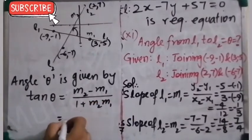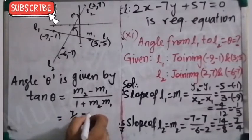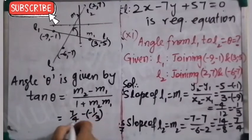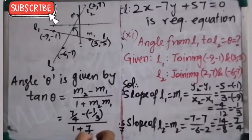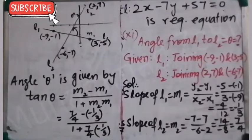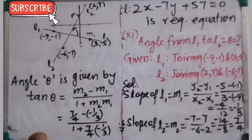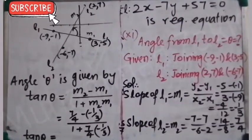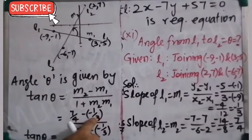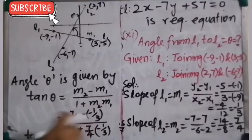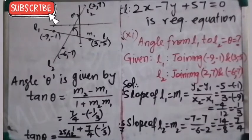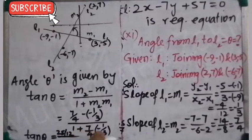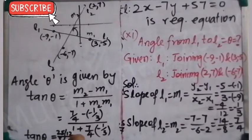Now we substitute: M2 is 7/4 and M1 is -1/3. The numerator: 7/4 minus (-1/3) — using LCM of 12 gives 21/12 + 4/12 = 25/12. The denominator: 1 + (7/4)·(-1/3) = 1 - 7/12 = 5/12. So tan θ = (25/12) / (5/12) = 25/5 = 5. Therefore tan θ = 5.